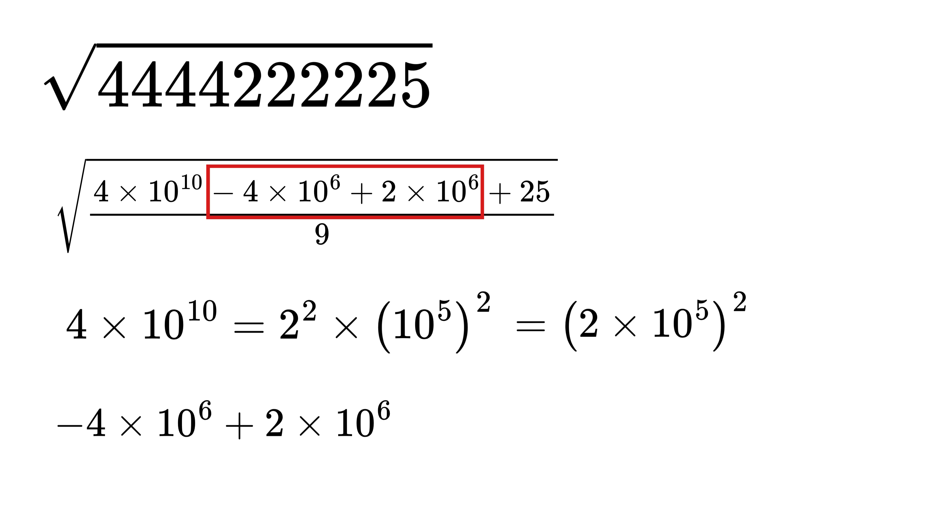We can rewrite it as 2 times 10 raised to 5 plus 1, or 2 times 10 raised to 5 times 10, right? Next, this 10 can be broken as 2 times 5, so this becomes this 2 times 2 times 10 raised to 5 times this 5.